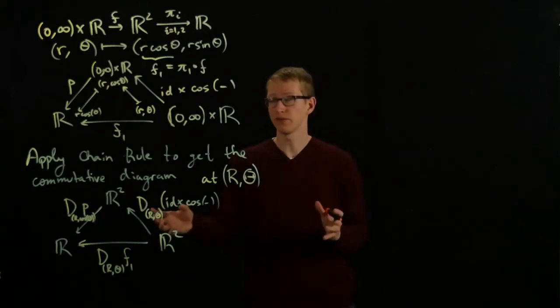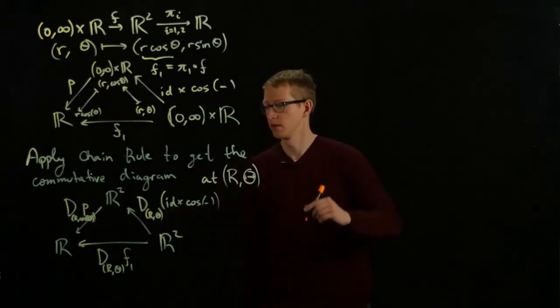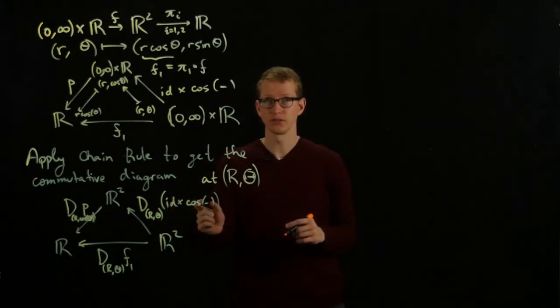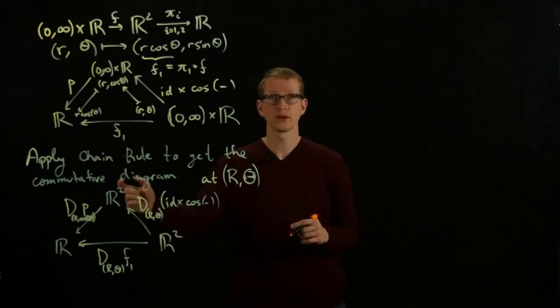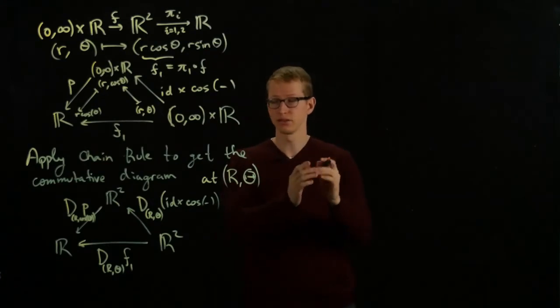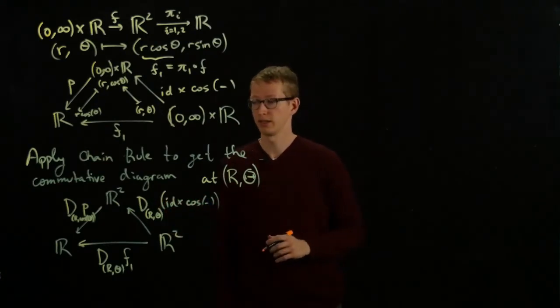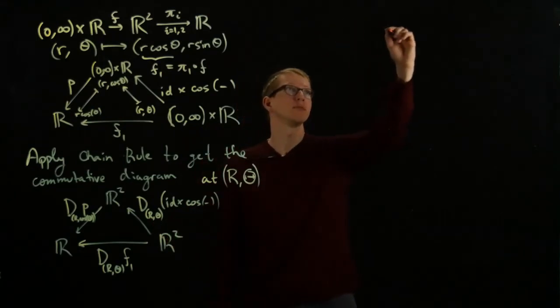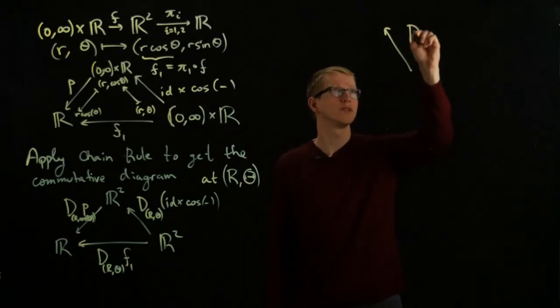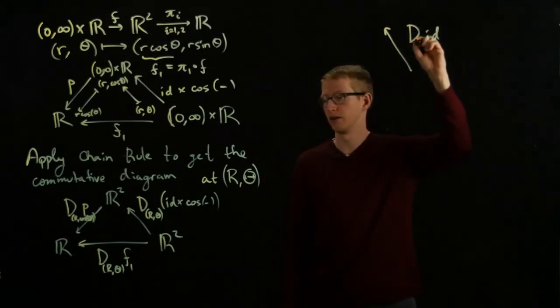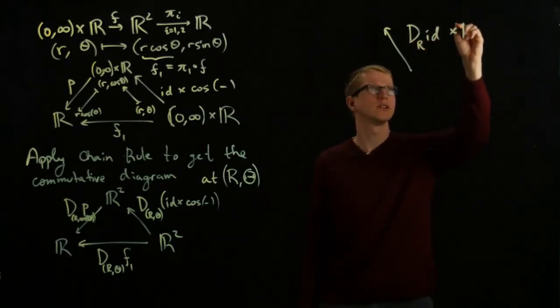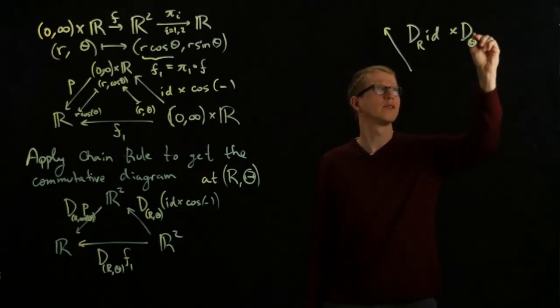Let's take the derivatives of each of these two functions. It's a fact that if you have two differentiable functions on two different domains and you take their products, which means that you apply them component-wise on each of their factors, then the derivative distributes throughout this product. In other words, this right-hand side becomes the derivative of the identity at R times the derivative at θ of the function cosine.